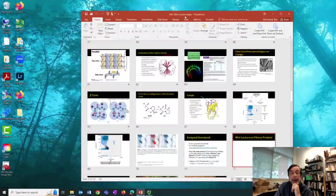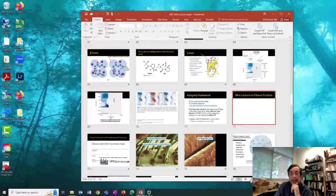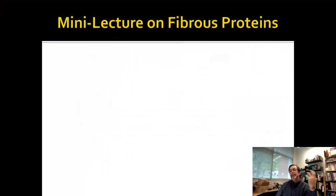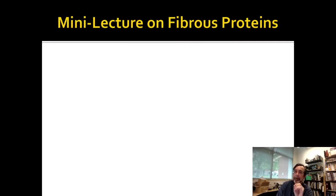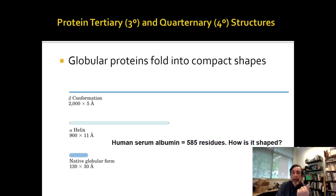All right, time for a mini-lecture. We're going to have two. This one's about fibrous proteins, and at first you might think fiber that you eat. This is more about fiber that protects you, fiber that grows on you. Your hair is a fibrous protein, your fingernails are a fibrous protein, and these are going to be different than the proteins that we put in a test tube and dissolve up. Those are globular proteins, and they have compact shapes.